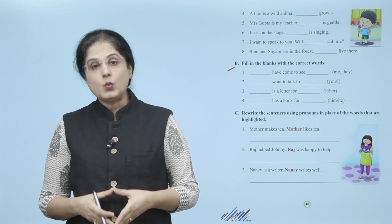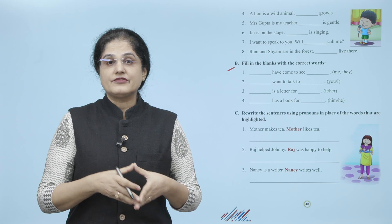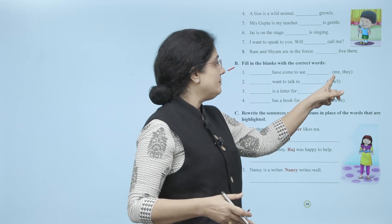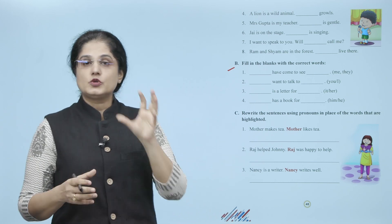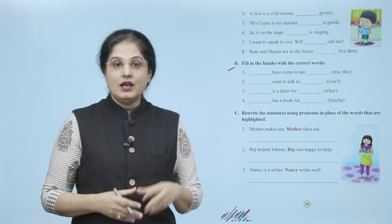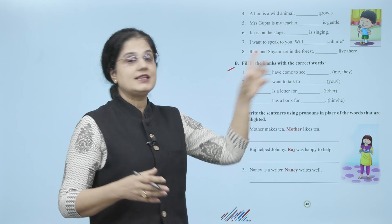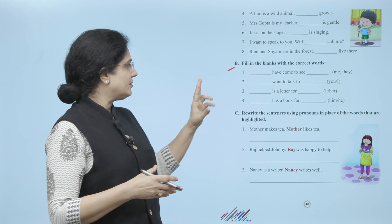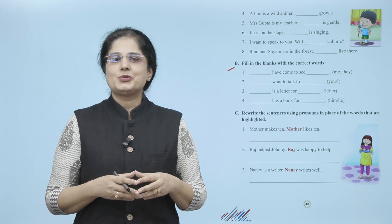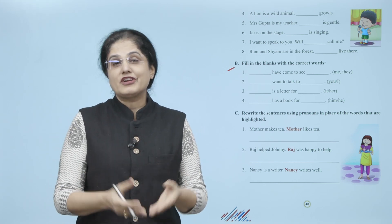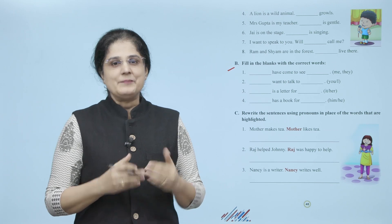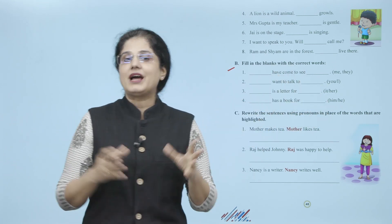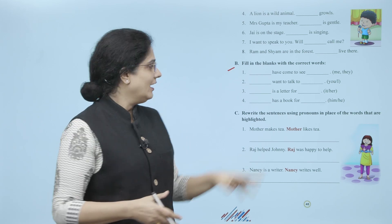Now let's look at the next exercise — fill in the blanks with the correct words. 'Dash have come to see dash.' Bracket mein diya hua hai: me or they. Joh bracket mein word diya gaya hai wo aap dekhenge ki kaunse blank mein kaunsa word sahi hai. For example: 'They have come to see me.' Isi tarah se baaki sentences mein bracket mein diye pronouns ko sahi blanks mein fill kariye.